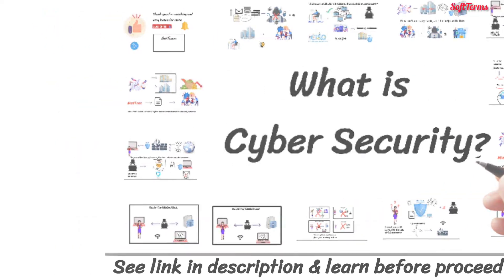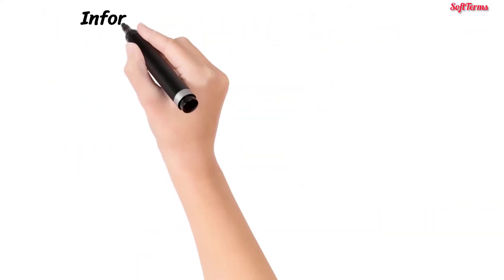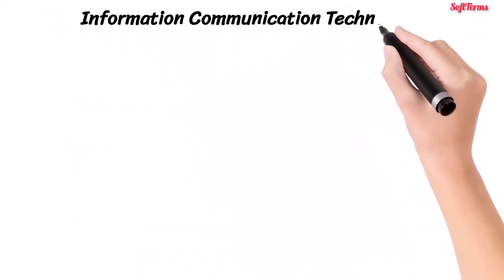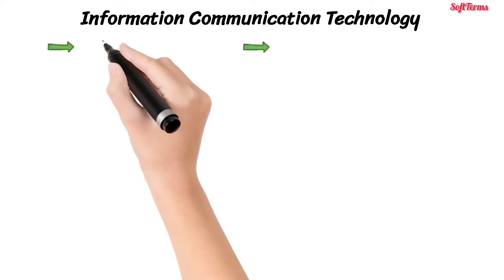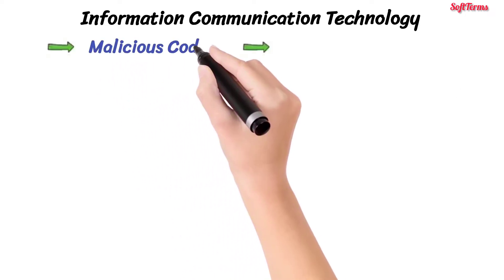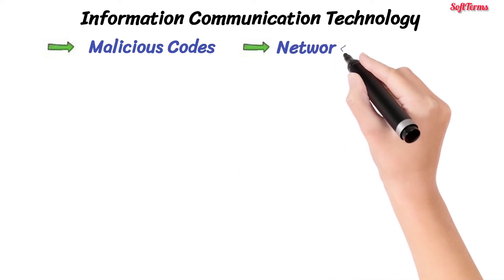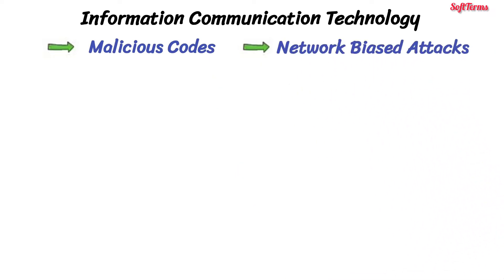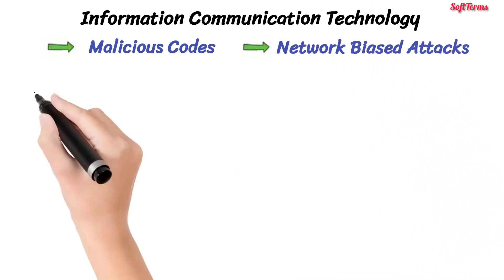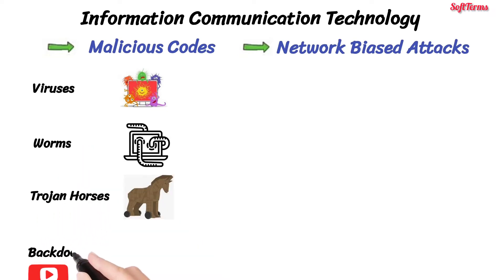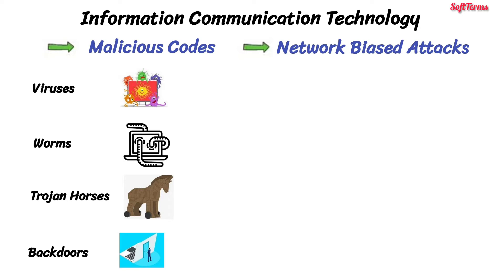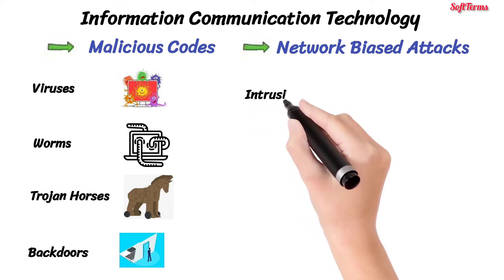ICT stands for information communication technology. ICT security threats can be categorized into two main categories: malicious codes and network-based attacks. Malicious codes include computer viruses, worms, Trojan horses, backdoors, etc. Network-based attacks typically include intrusions, eavesdropping, denial of service attacks, etc.